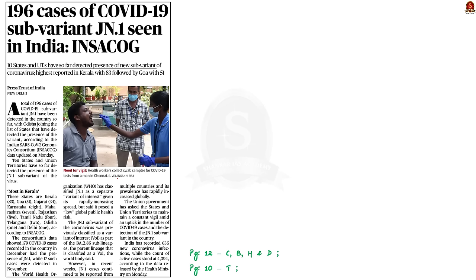Look at this news article. Nearly 196 cases of the COVID-19 sub-variant JN.1 have been detected in the country. The highest cases have been reported in Kerala with 83 cases, followed by Goa. The Union government has asked state governments to maintain surveillance on the number of cases. In this discussion, we are going to see about the major COVID-19 vaccines in India.